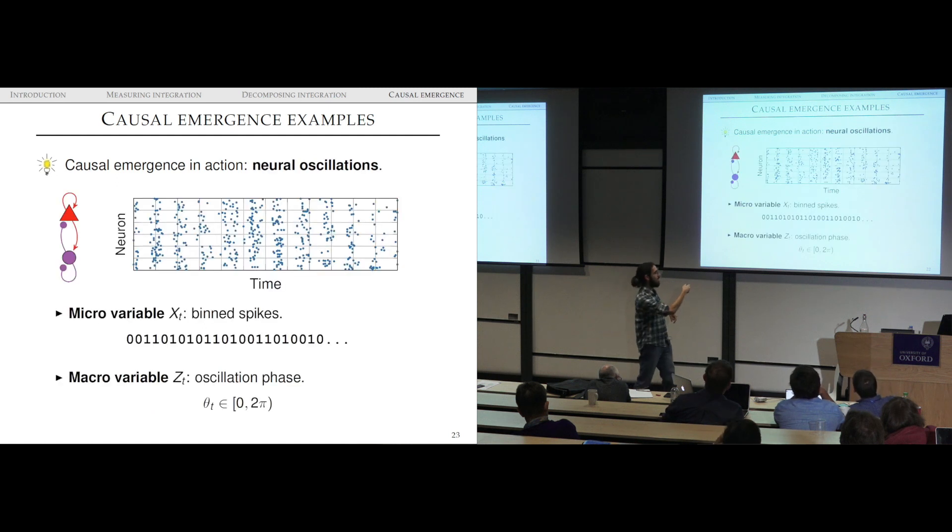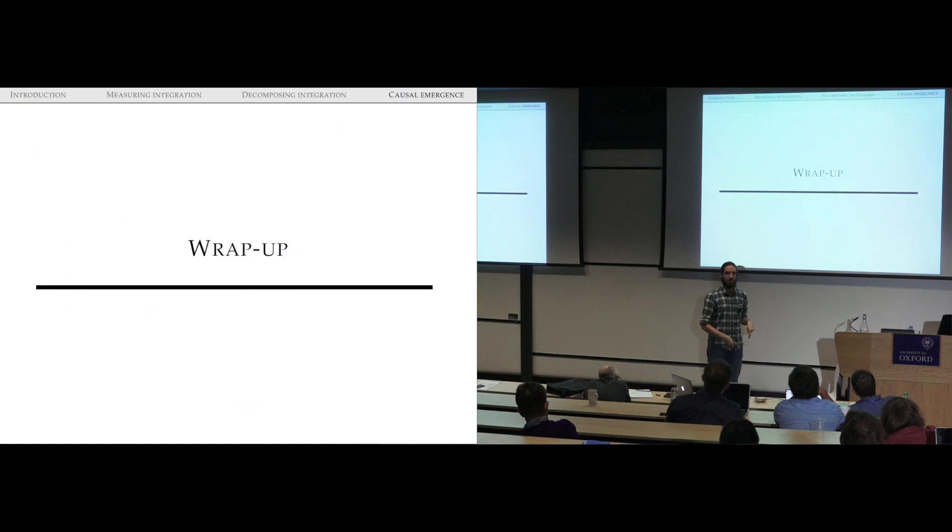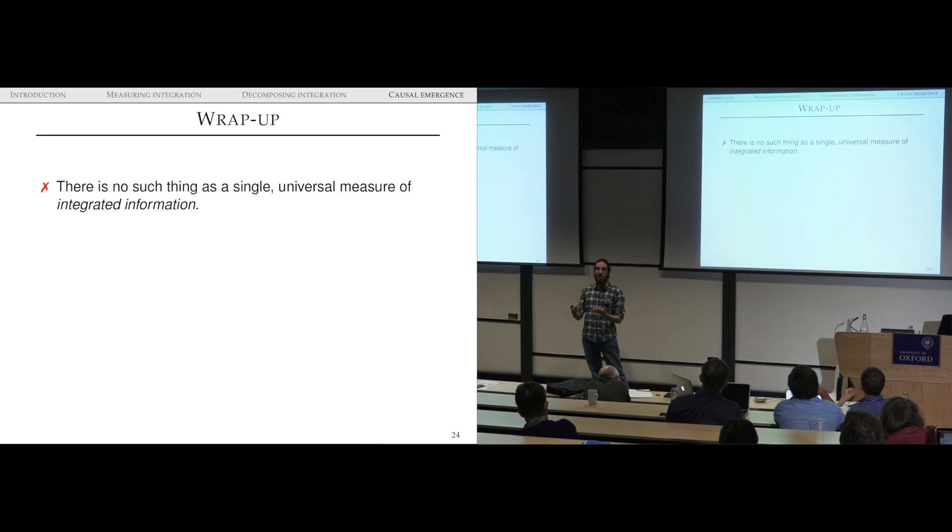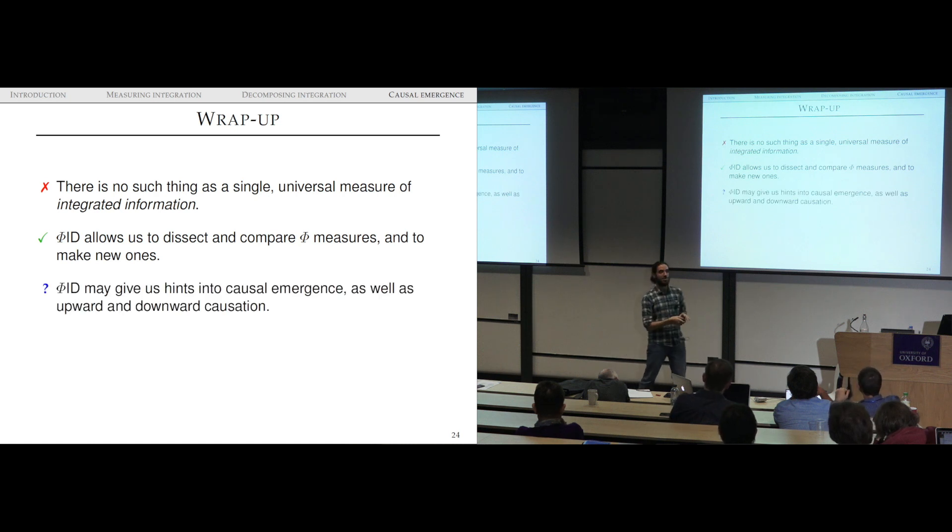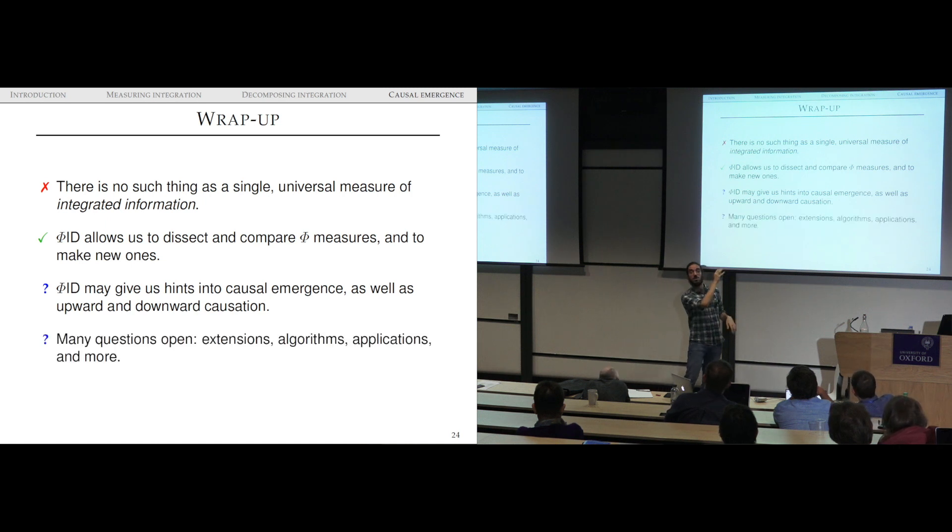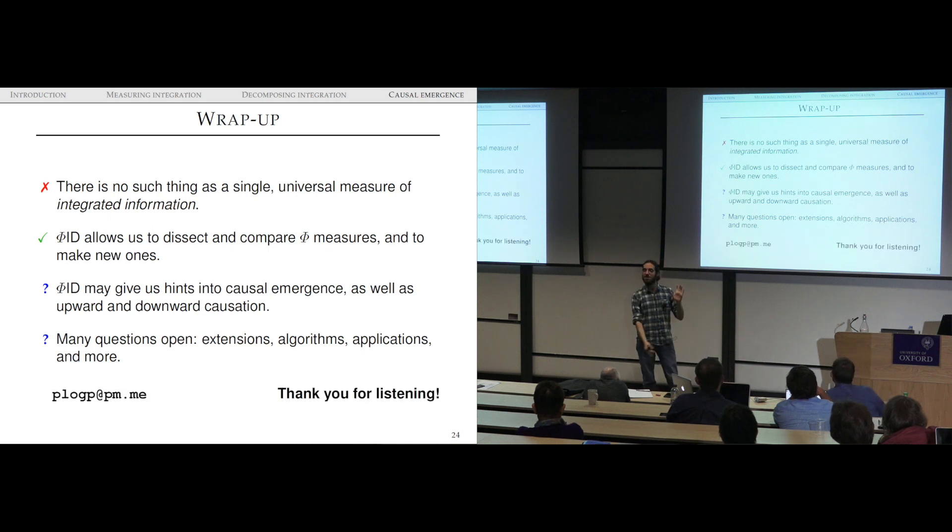Similarly for neural oscillations, talking about bin spikes and actual oscillation phase. Finally, to wrap up real quick, restate my conclusions. I argue there's no such thing as a single universal measure of integrated information, because integrated information is an aggregate of different effects. We should be looking at all of those effects and how they relate between each other and to the structure of phenomenology, as a tentative speculative research agenda. We presented this framework PhiID that allows us to compare phi measures and to propose new ones and to manipulate them in nice ways. PhiID might give us some insights into causal emergence, as well as some other concepts like upward and downward causation. Lots of stuff to do. This is a very new thing, and that'll be it. Thank you very much for listening.